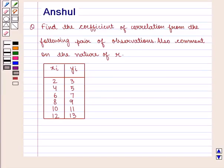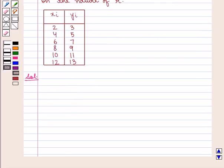Hello and welcome to the session. In this session, we are going to discuss the following question which says Find the coefficient of correlation from the following pair of observations. Also comment on the nature of r. Let's start with the solution.